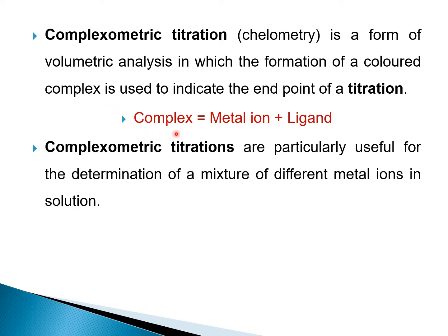In complexometric titration, a complex is formed at the endpoint. We are going to find out the concentration of the metal ion — the metal ion is the analyte and the titrant is a ligand. Complexometric titrations are particularly useful for the determination of a mixture of different metal ions in a solution.